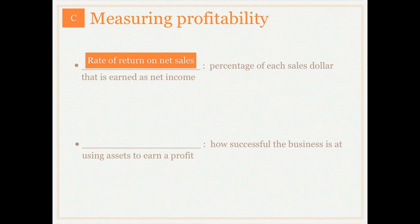The rate of return on net sales is the percentage of each sales dollar that basically becomes net income. So after everything is paid — the expenses, the contra sales accounts are taken out — this is how much actually becomes net income. To calculate it, we take net income and divide that by net sales.